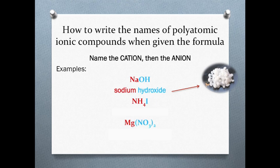NH4I is the formula for a compound containing the ammonium cation and the iodide anion, so its name is ammonium iodide.